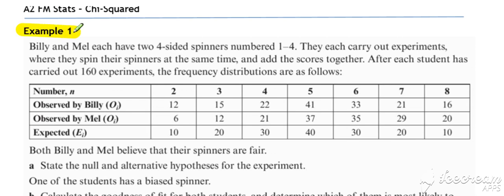Looking at our first example, we've got Billy and Mel, who both have two four-sided spinners. They spin the spinners and add the scores together, so the possible scores vary from two up to eight. We've got observed values for Billy and observed values for Mel. We've then calculated what we would expect to get for each of the scores. So we've got observed and expected values to compare.